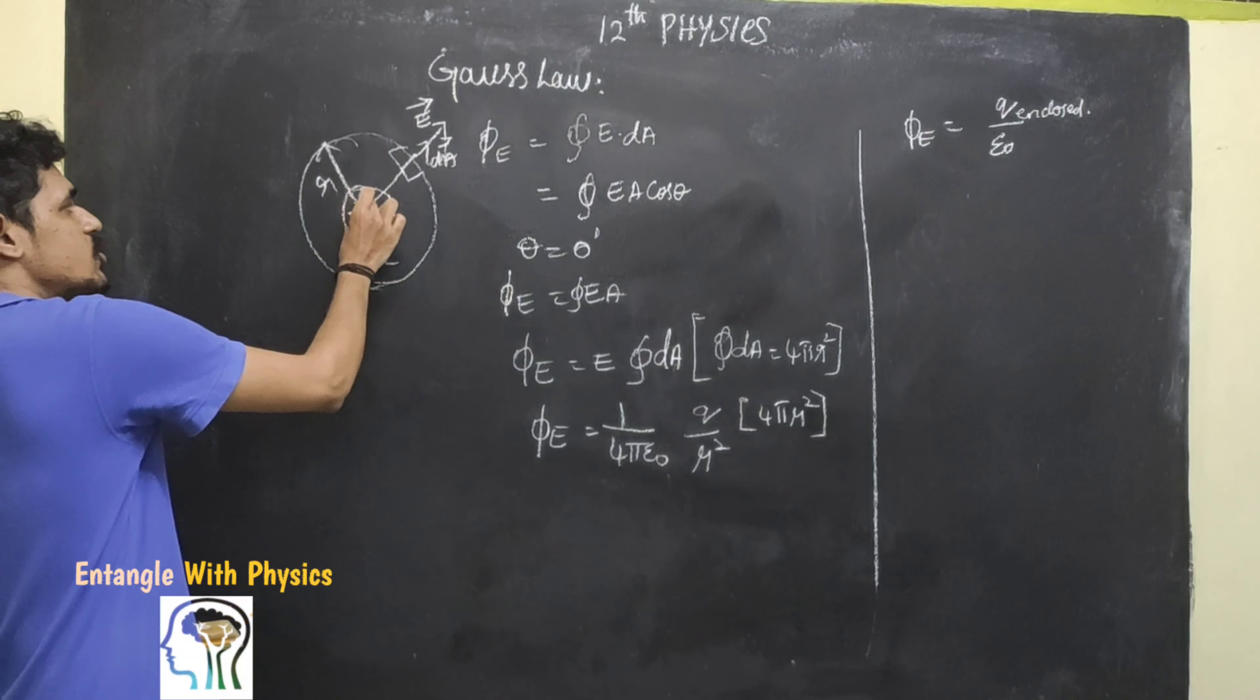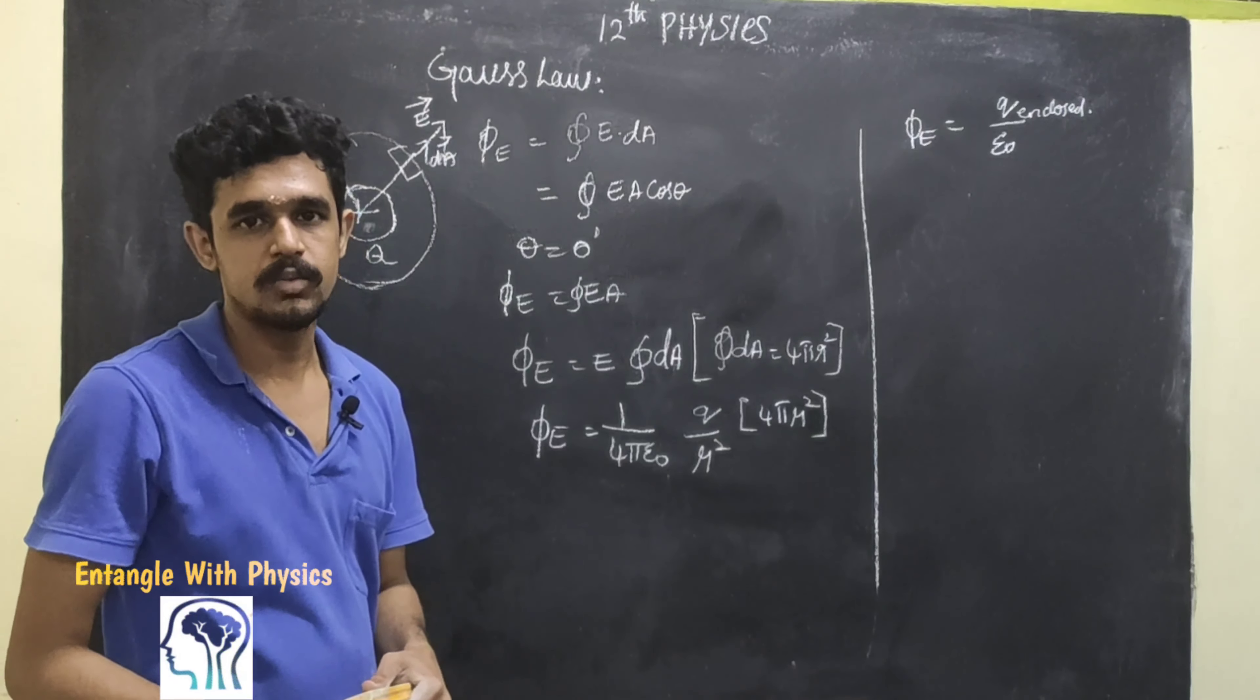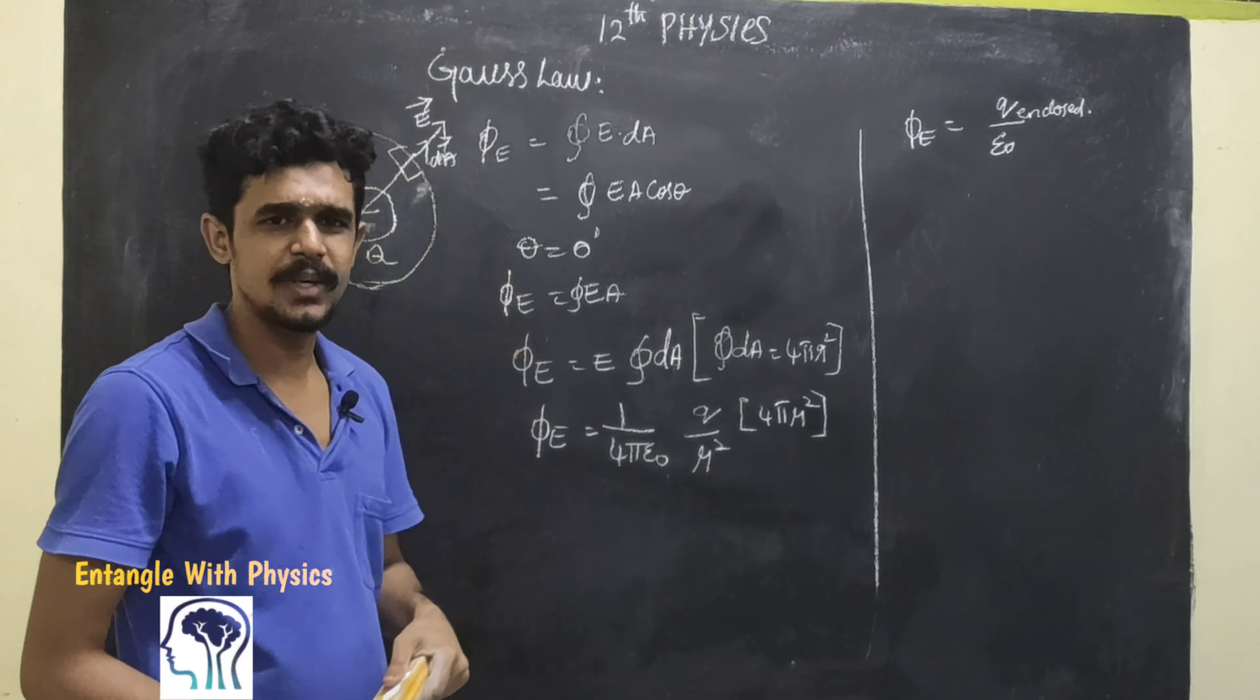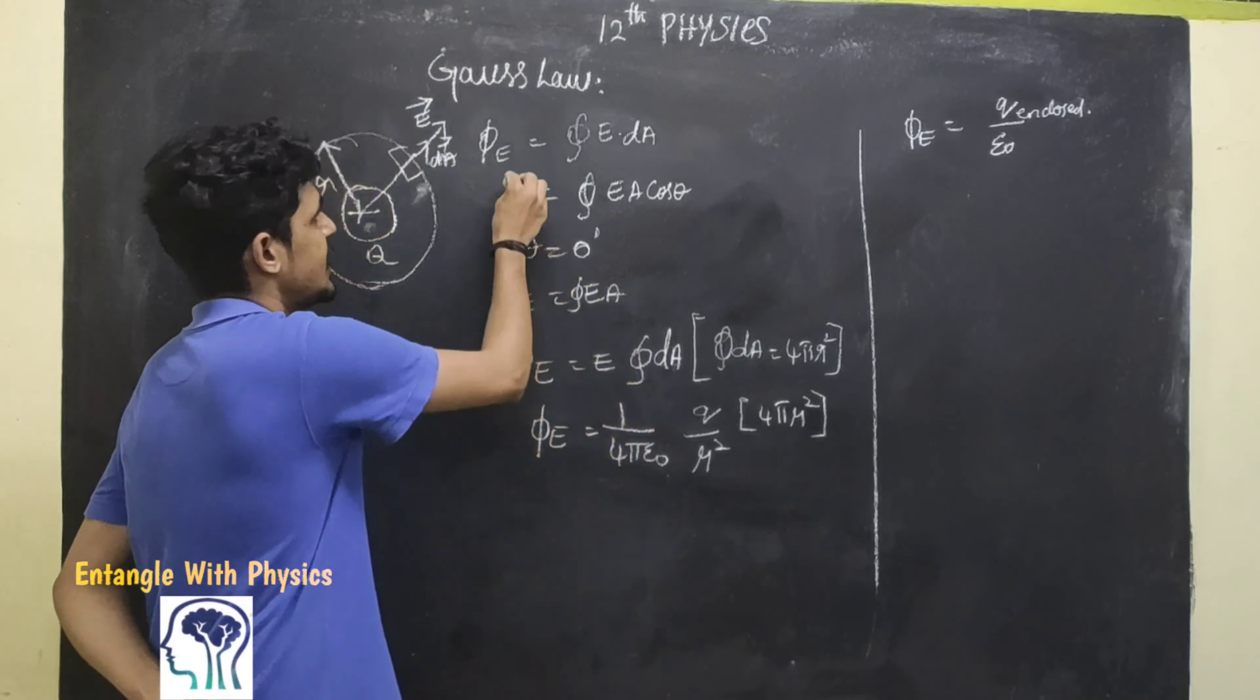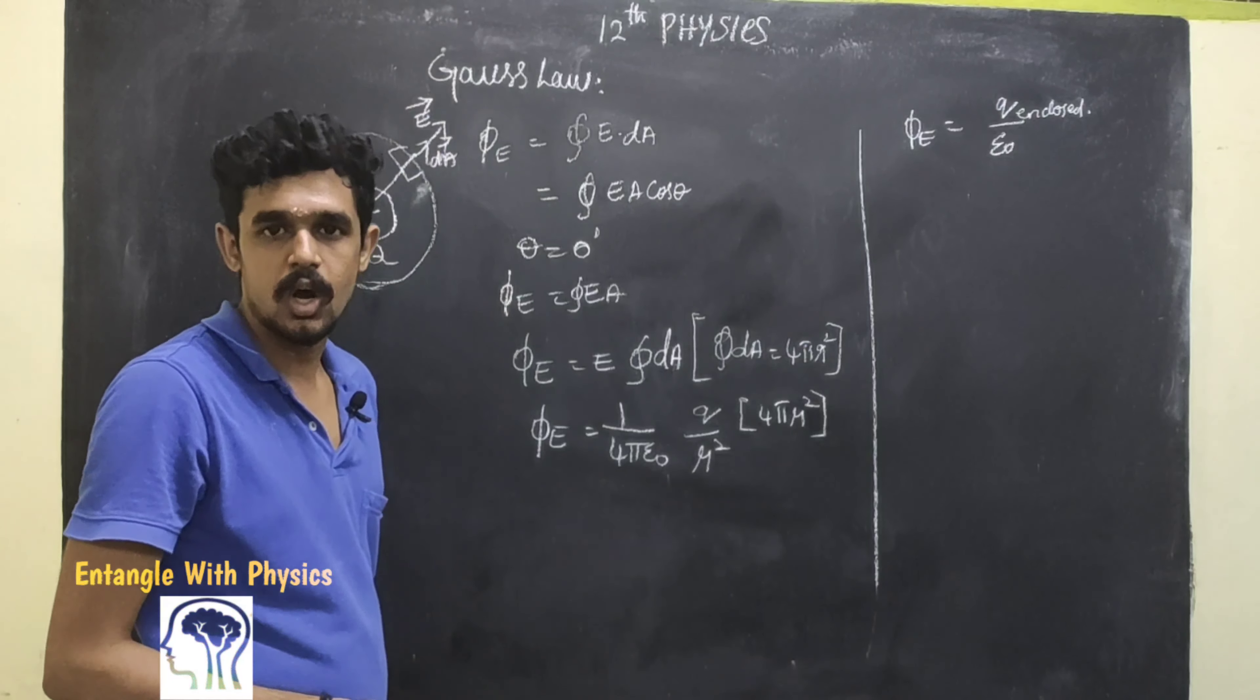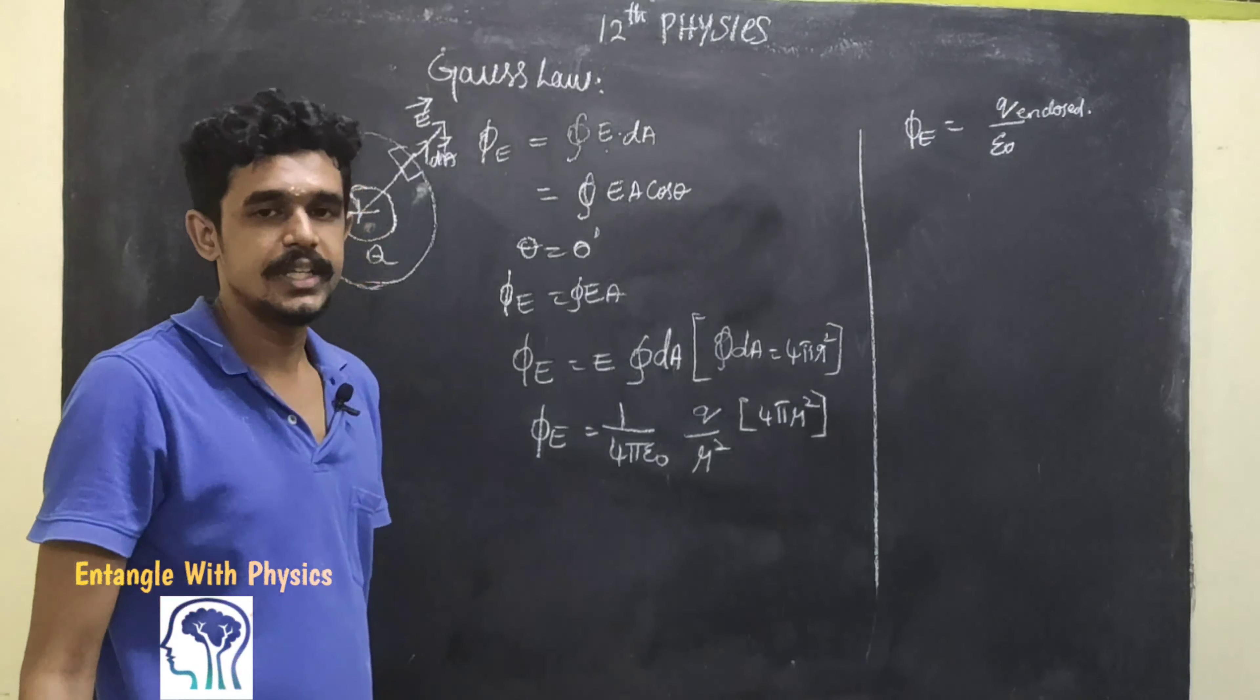For a positive charge, the surface is at radius R. DA is the area element. The electric flux φE equals the closed integral of E dot DA.